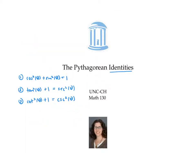We've now proved three trig identities. The first one we proved using the unit circle and the Pythagorean theorem. The second and third identities we proved by using the first identity and a bit of algebra.